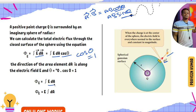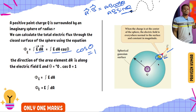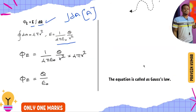Next, we integrate the small area dA over the total sphere. The electric field value from Coulomb's law is E = 1/(4πε₀) × Q/r². Integrating dA over the closed surface gives A, which is the curved surface area of the sphere. From 10th standard, the curved surface area of a sphere is 4πr².